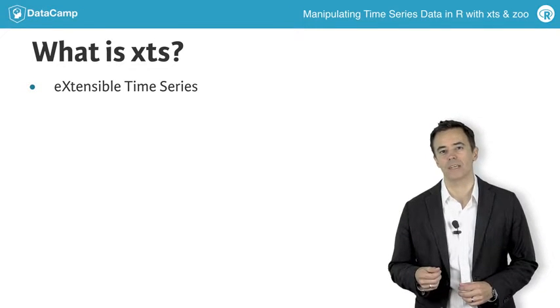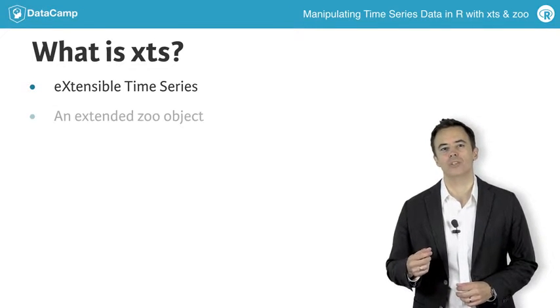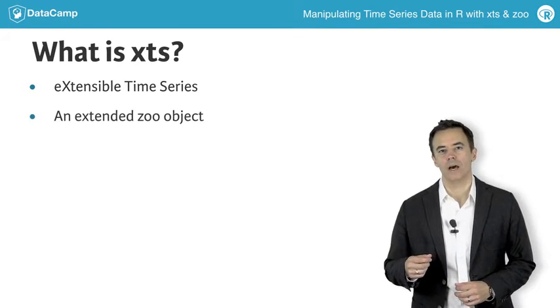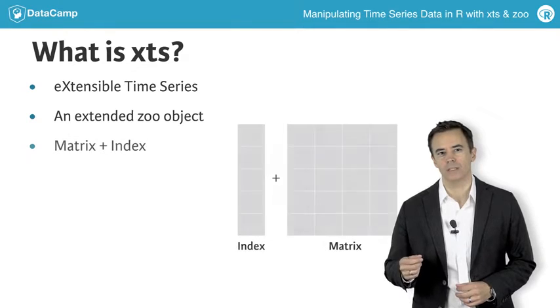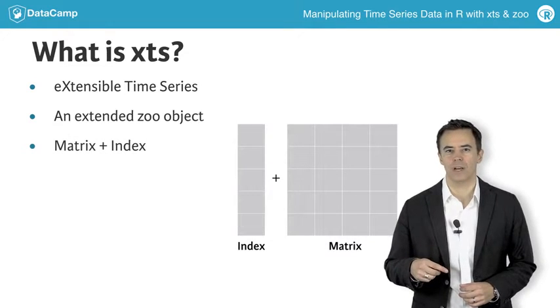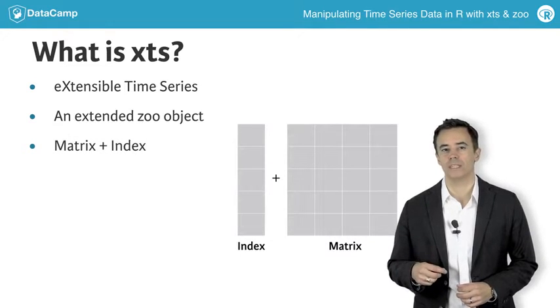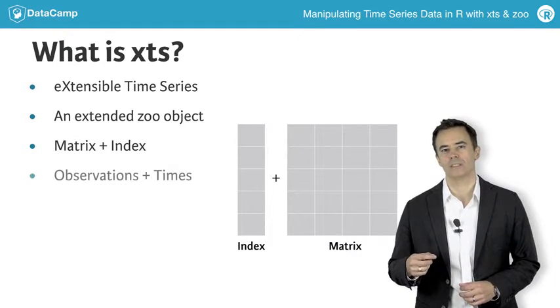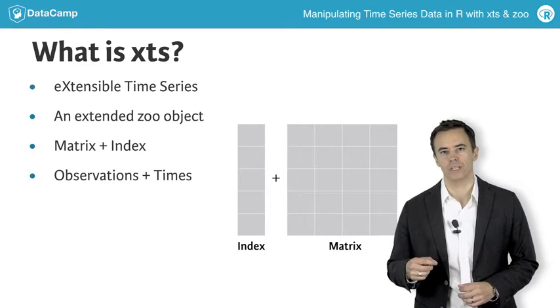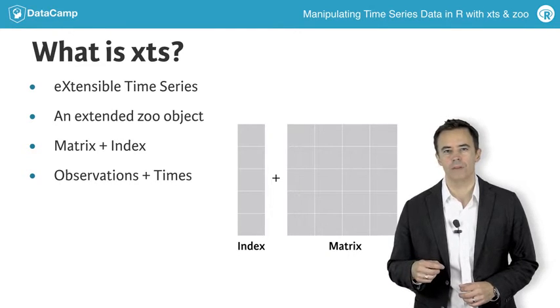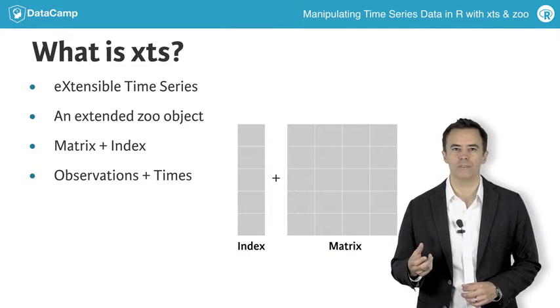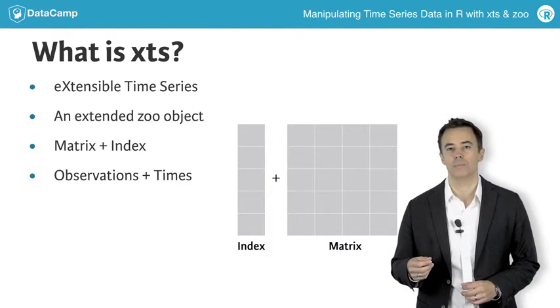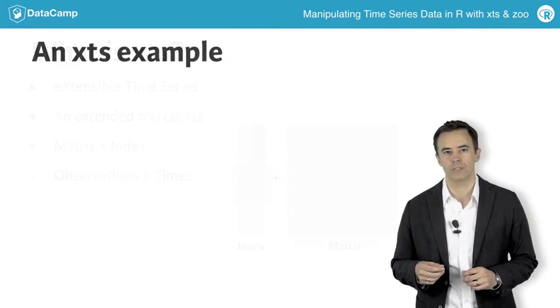At the heart of an XTS is a zoo object — a matrix object plus a vector of times corresponding to each row, which in turn represents an observation in time. Visually, you can think of this as data plus an array of times.